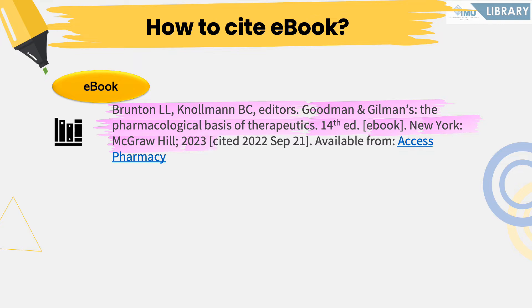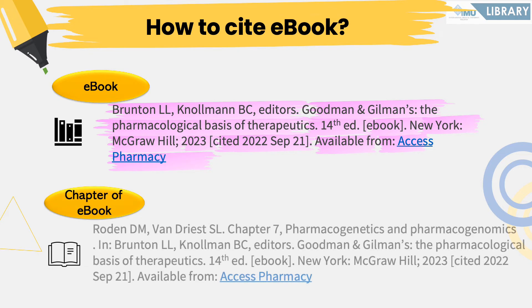Next, add the cited date in square brackets. The cited date should start with the year, then the abbreviated month, and day. Complete the reference by including the words 'available from:' followed by the web address for the eBook. To cite a chapter of the eBook, begin with the first author of the chapter — family name followed by initials. Then add the chapter number, a comma, the chapter title (capitalizing only the first word and proper nouns), and a full stop. After that, include the word 'In:' followed by the complete eBook citation format.